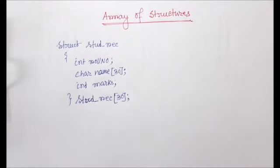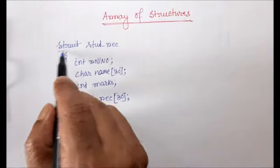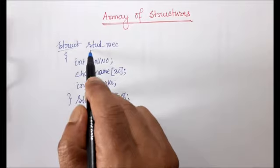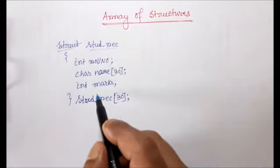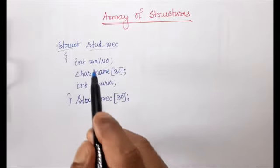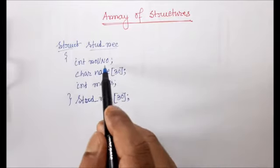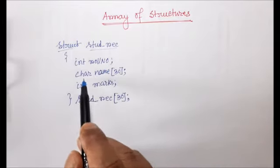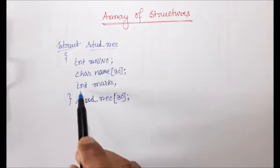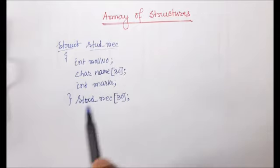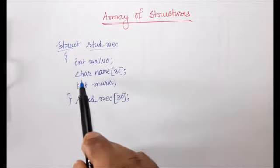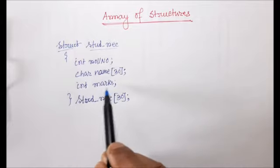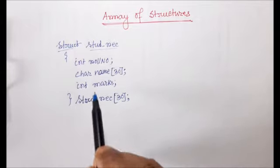What is the meaning of this line? Here struct is the keyword, student is the name of the structure — you can also call it the structure tag. This structure contains three elements: one element is integer, another element is character, and another is integer. So roll number is integer, name is character, and marks is integer — a three-element structure.